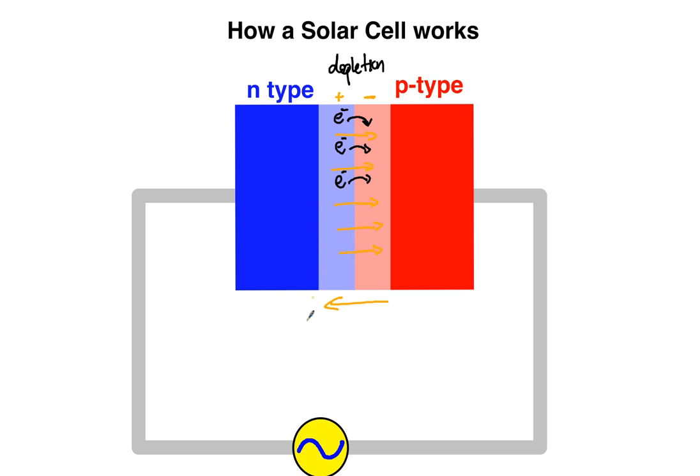And so in essence what this setup does actually is rectifies an alternating current. It actually makes it a direct current. So that in essence is the beginning of a diode.